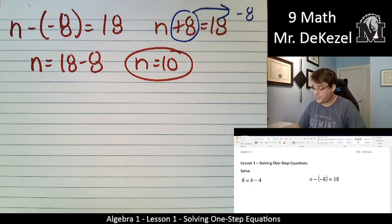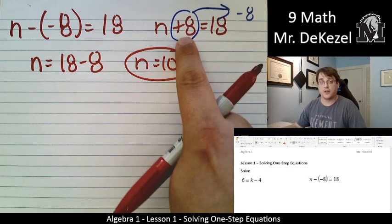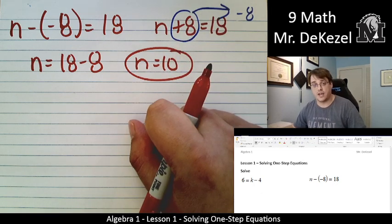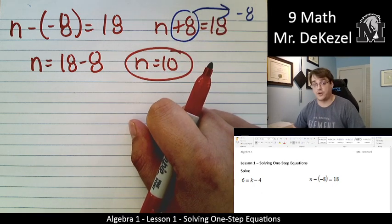You may have known that already. But when we take something across the equal sign when we're adding, we subtract it from the other side. We do the opposite when we move it across the equal sign.